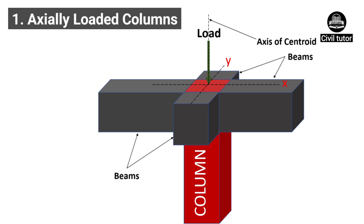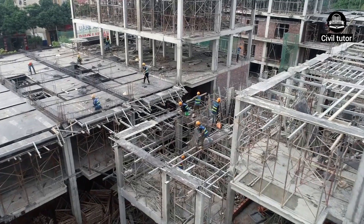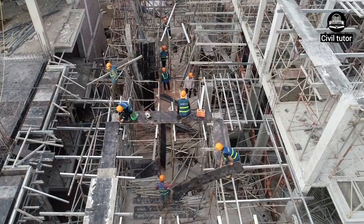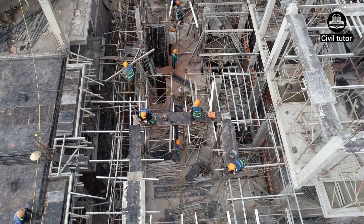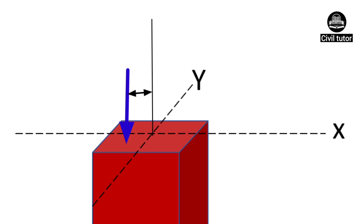In an axially loaded column, the load acting on the column passes through the centroid of the section. In such columns, the beams on all four sides of the column will be of uniform length and cross-section. Hence the moment generated by all four sides will be of equal magnitude, and the moment created by each beam will be balanced out by their opposite beams, so the net effect of the moment is negligible. However, it is practically very difficult to cast an axially loaded column, which is why IS 456-2000 suggests designing a column by considering a minimum eccentricity of 20mm. By eccentricity, we mean the load does not pass through the centroid in a real sense, but slightly away from the centroidal axis of the column.